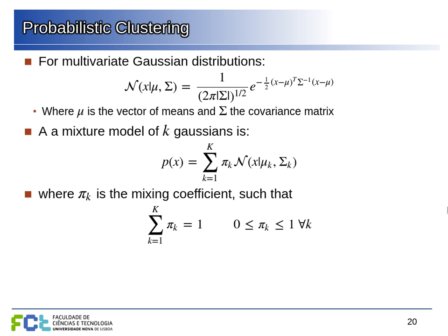We take k Gaussian distributions and mix them together, each with a different weight pi, with the constraint that the sum of these weights equals one — a requirement for a valid probability distribution that integrates to one over the whole space. Our Gaussian mixture model is defined by the covariance matrix, mean points, and weight pi for each Gaussian component in the mixture.